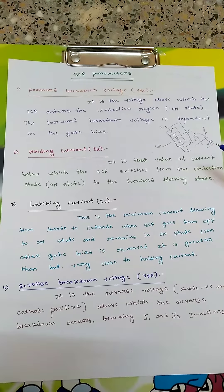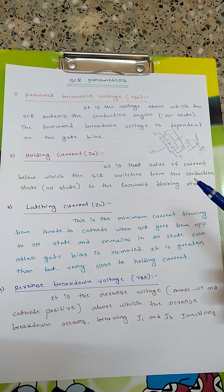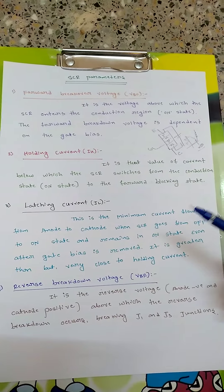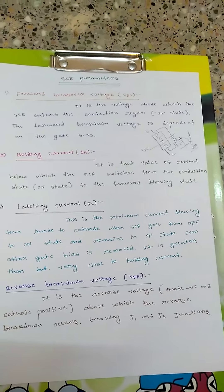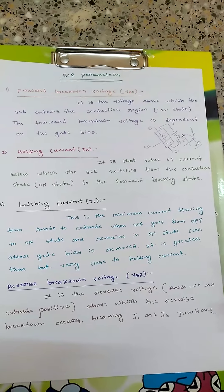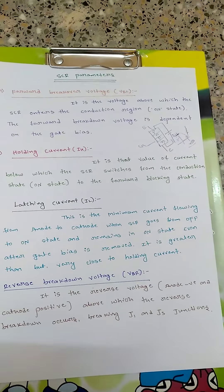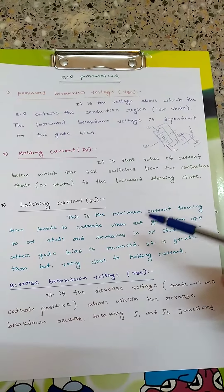The voltage at which the SCR starts conducting is called the forward breakover voltage. Holding current is the value of current below which the SCR switches from the conduction state (on-state) to the forward blocking state. So if the SCR current value comes down to the holding current value, the SCR will go from on-state to off-state. Holding current is the minimum current required to keep the SCR conducting.